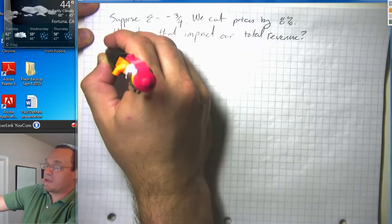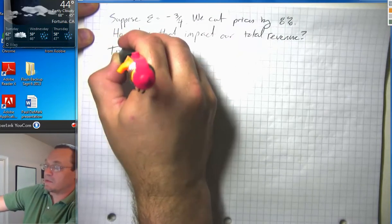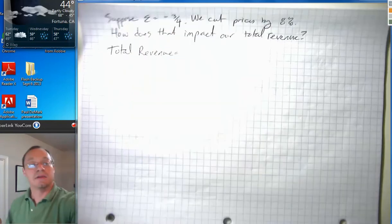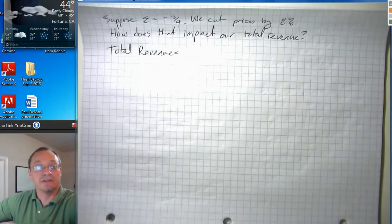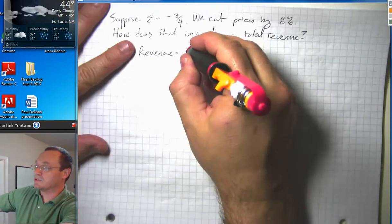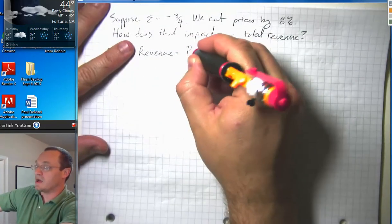So remember that total revenue, sometimes just called revenue, is how much money you take in, your total dollar sales volume before any costs. Total revenue is just price times quantity.